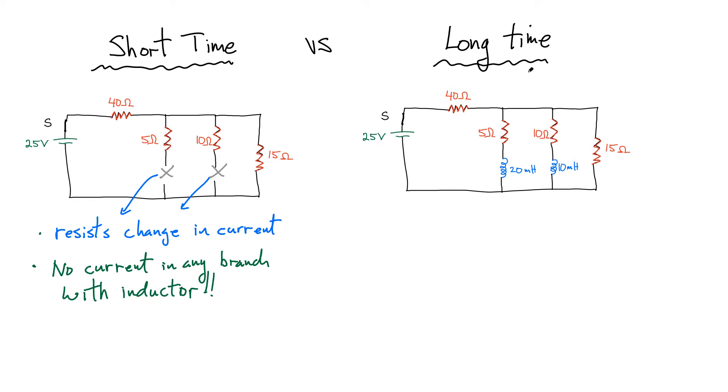Now in a long time limit, it's also very easy. All you have to do is, after a long period of time once you've reached steady state current in each branch, basically the inductor no longer resists any change and it acts just like a regular wire, just like the black wire that I drew here.